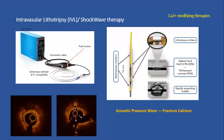When you look into the vessel after IVL, the left panel shows a severely calcified concentric lesion with thick calcium. After lithotripsy, you see multiple fractures as demonstrated by the arrows.